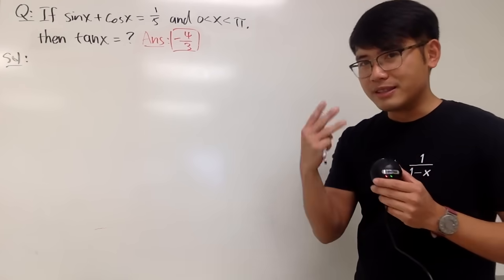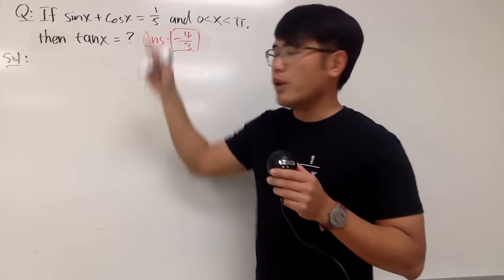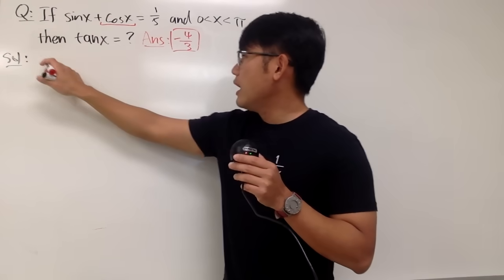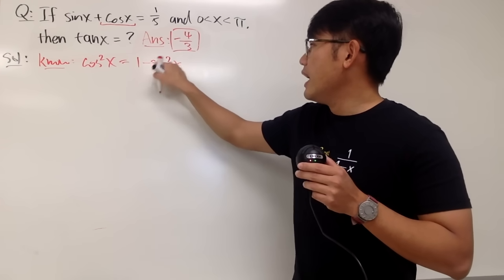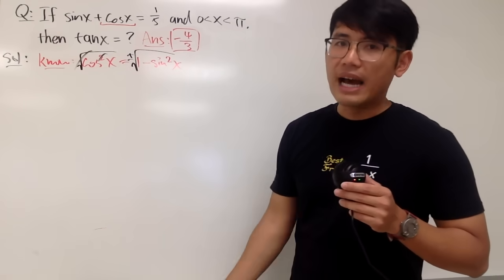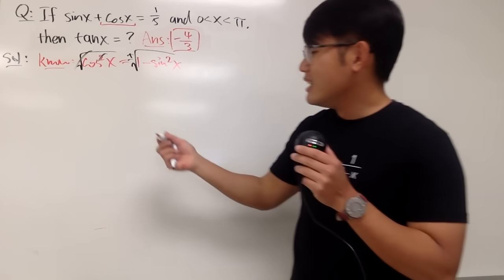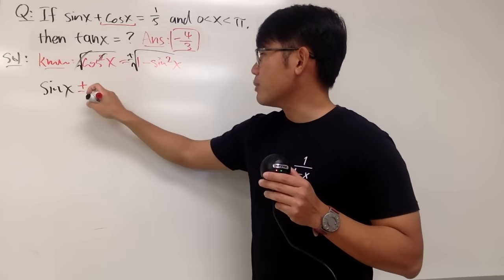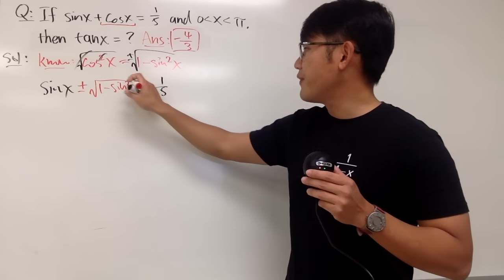Then of course I just have to divide them — sine is on top — and that gives the tangent. In order to do that, I will look at this equation in terms of just sine x. Let me change the cosine to sine. We know that cosine squared x equals 1 minus sine squared x. Taking the square root of both sides, don't forget to include the plus or minus on the right-hand side. So I'll plug that in: sine x plus or minus square root of 1 minus sine squared x equals 1 over 5.